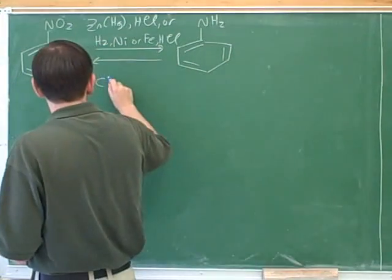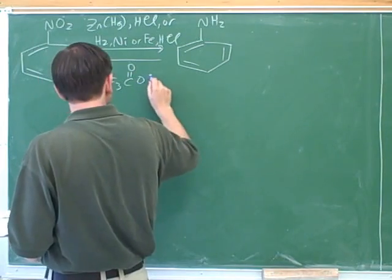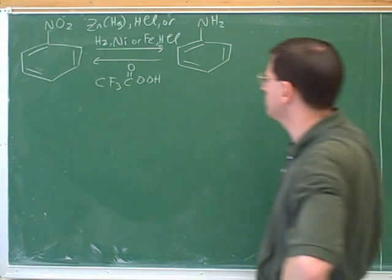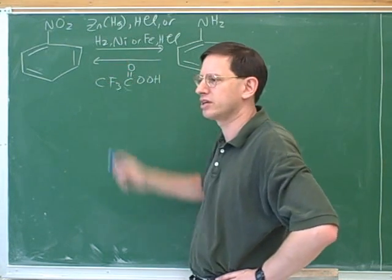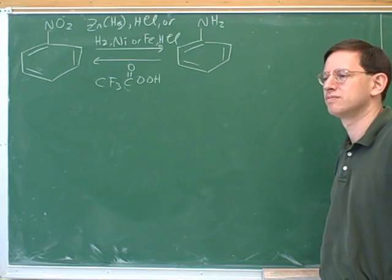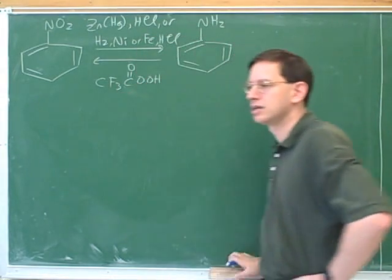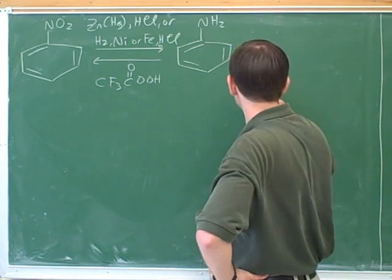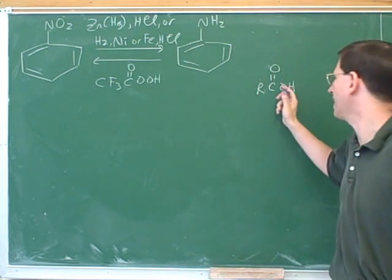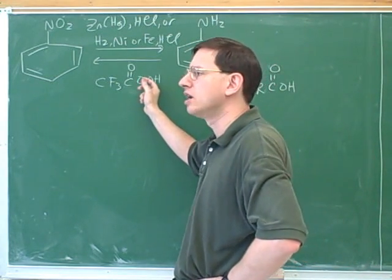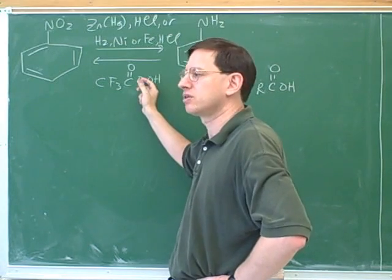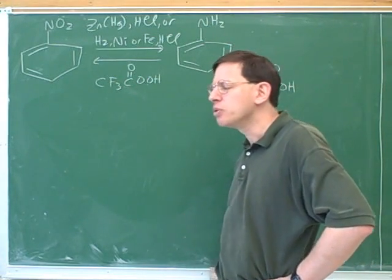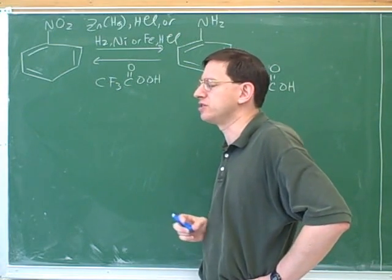For the reverse reaction, the textbook gives one reagent. Do you recognize what general type of functional group we have going on here? A peroxide. That's right. Because we have two oxygens bound to each other. So we don't want to confuse this with a normal carboxylic acid. Here we have two oxygens, so we would call this a per acid, or a peroxycarboxylic acid.